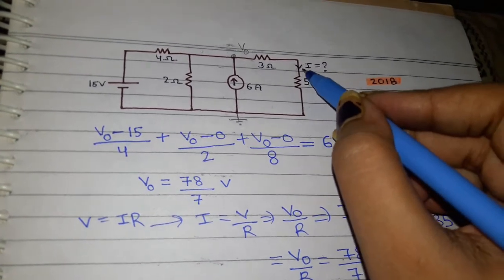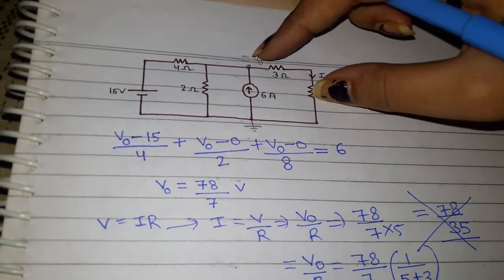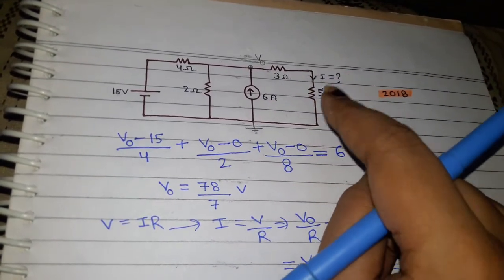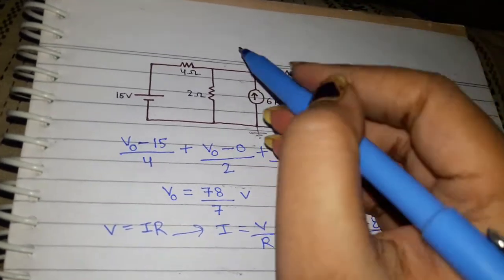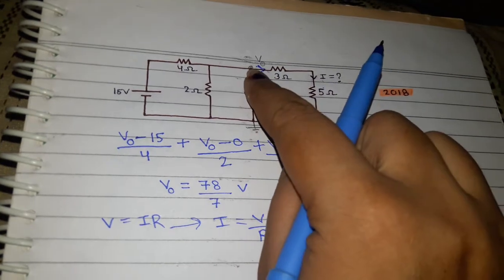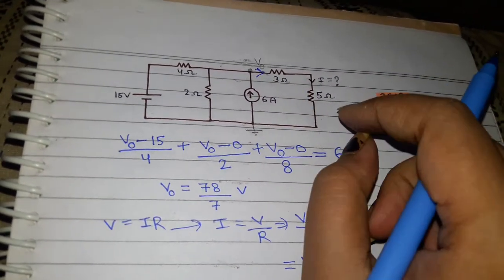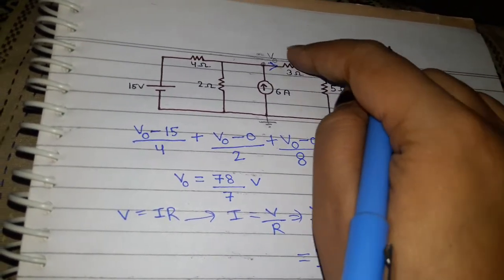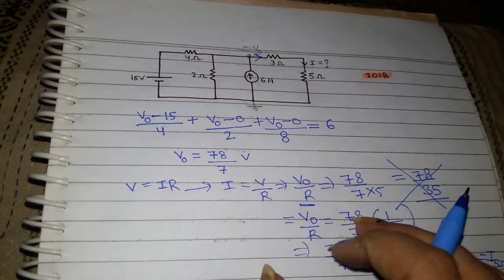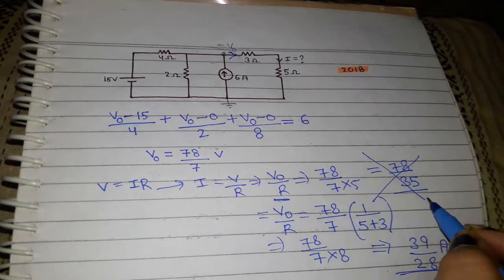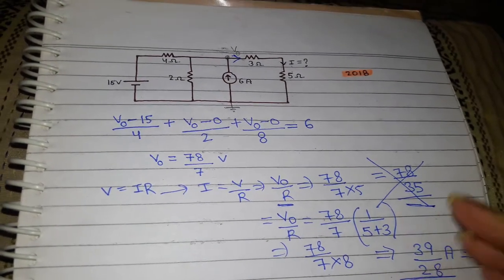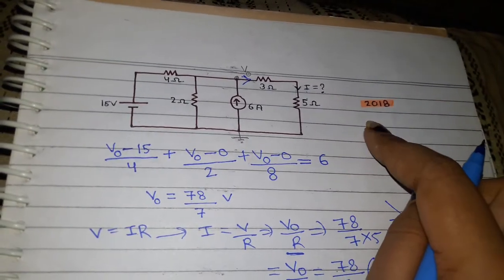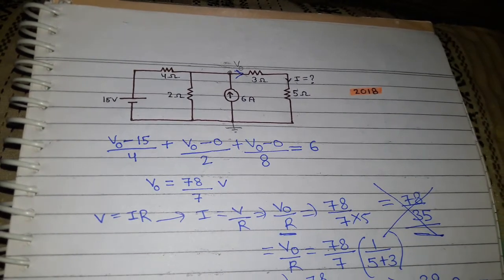These two resistances combined draw power from your sources — whether voltage source or current source — so they act simultaneously. The current drawn is the one passing through both resistances; you cannot treat the resistance as just 5 ohms, because it is not the only one drawing power. Both act together. So 39/28 amperes is the correct answer. This is a very common mistake students make, so keep this in mind. This was the UPSC ESC Prelims 2018 question. Stay tuned for more questions in the next video.